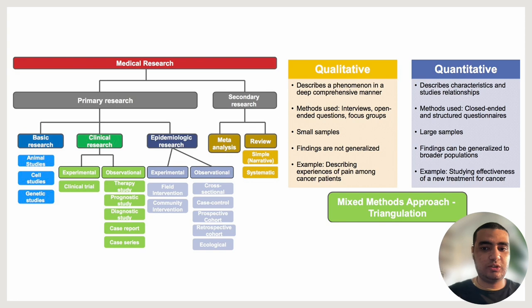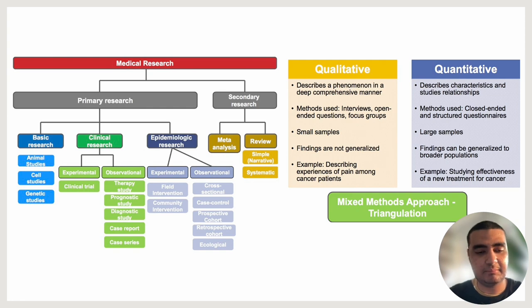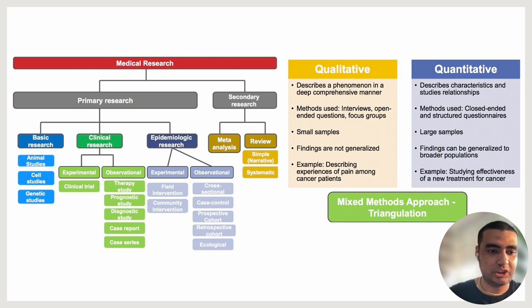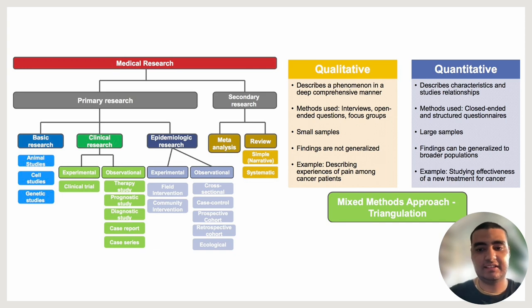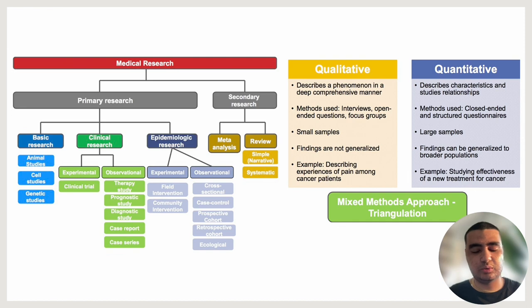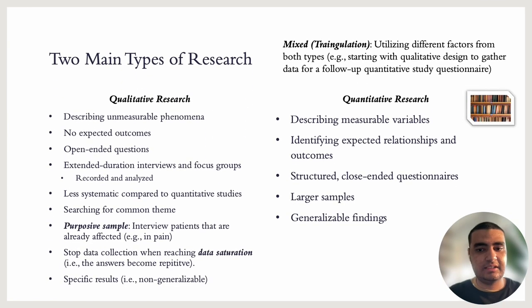Here is a basic overview taken from Dr. Amel's lecture regarding the types of medical research. We have primary research and secondary research. This is a mind map, basically. These types of research range from basic research, which has non-human subjects, all the way to secondary research with meta-analysis, which is considered the highest in the hierarchy. There are also other types of classification, including qualitative or quantitative.